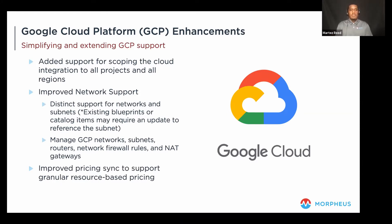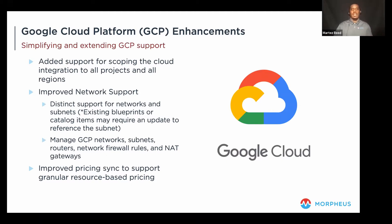Another item of note with the 5.3.1 release for GCP is improved pricing sync to support granular resource-based pricing. This means the ability to specify pricing at a more granular level — CPU, memory, and storage separately. Previously it was just compute or CPU and storage. This aligns with Google Cloud's more granular pricing model.